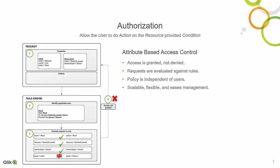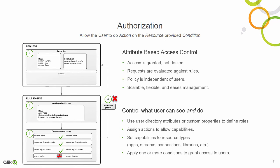Some noteworthy points about security rules in the rules engine are that access is always granted, not denied. This means that Qlik Sense will apply most privilege to a user based on all of the rules that a request is run against. The policy is independent of users, and it's scalable, flexible, and allows you to ease management by giving you the ability to apply one rule across a broad set of different resources. You can also control what users can see and do.